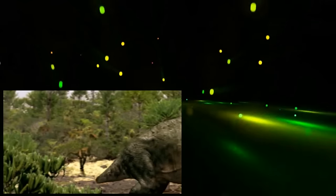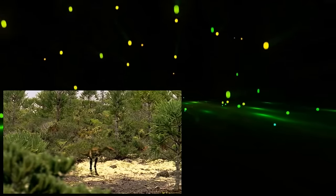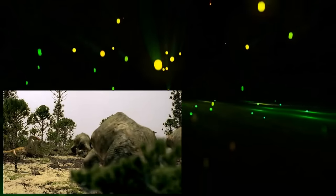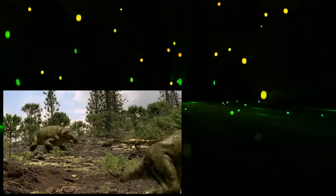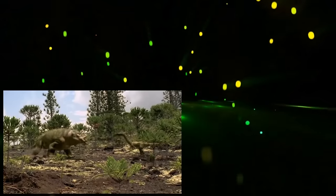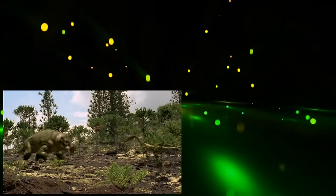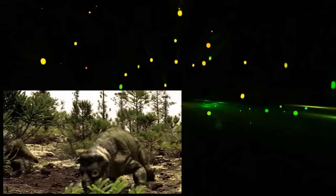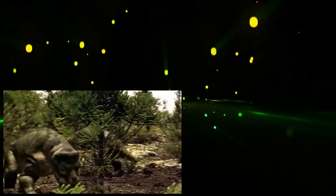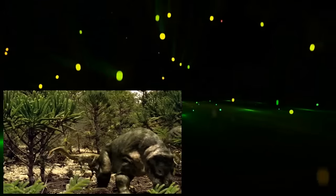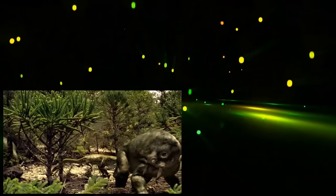For the swift Coelophysis, the Placerias are prey. This young female targets the old and weak in the slow-moving herd. One day the descendants of dinosaurs like Coelophysis will take over this world, but it is their speed and agility that gives them the edge in the mid-Triassic.